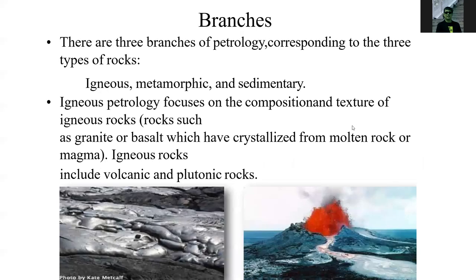We have three branches of petrology corresponding to three types of rock: igneous, metamorphic, and sedimentary. Igneous petrology focuses on the composition and textures of igneous rocks, such as granite or basalt, which are crystallized from molten rock or magma from volcanoes. Igneous rocks include volcanic and plutonic rocks.